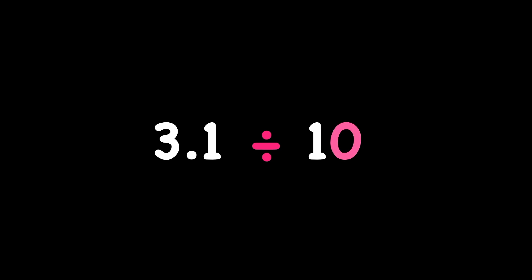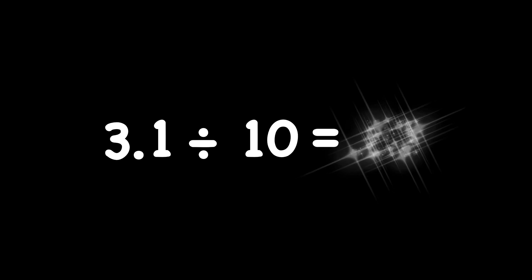For this problem, I see we're dividing by ten. So I'm going to move my decimal point one place to the left, so it would be just in front of the three. That means three point one divided by ten is point three one, or thirty-one hundredths.